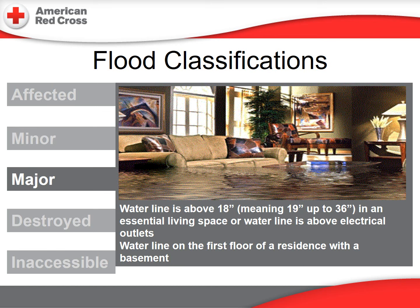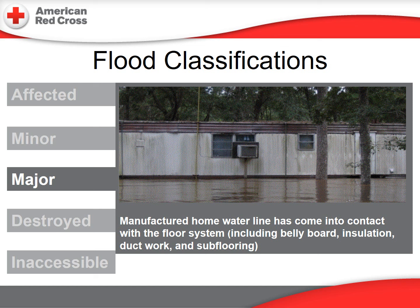This home would be classified as major damage — the water line is above 18 inches, up to 36 inches, in an essential living space. This can also mean the water level is above the electrical outlets, or that there is water at any level on the first floor of a residence with an essential basement. This manufactured home has a water line in contact with the floor system, including the belly board, insulation, ductwork, and subfloor — qualifying for major damage.